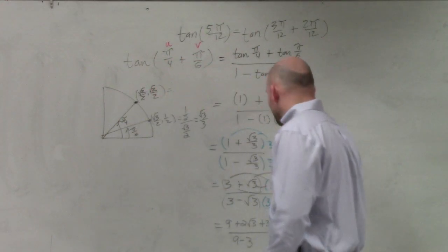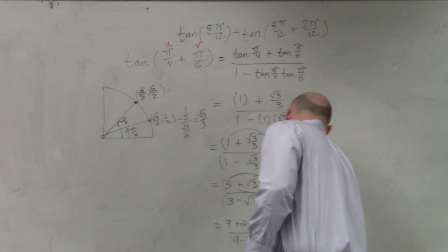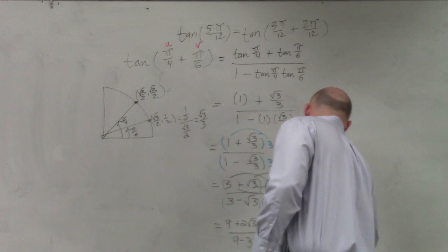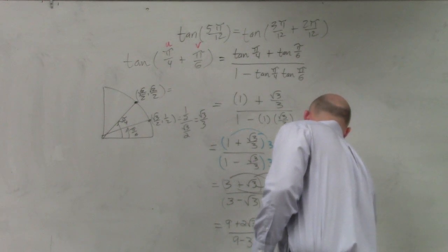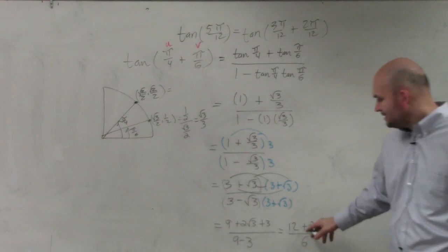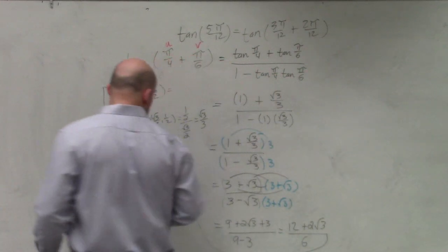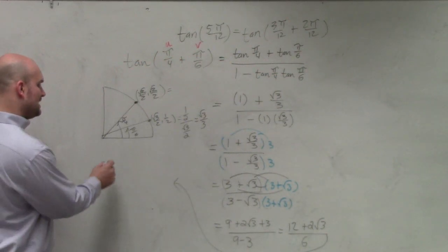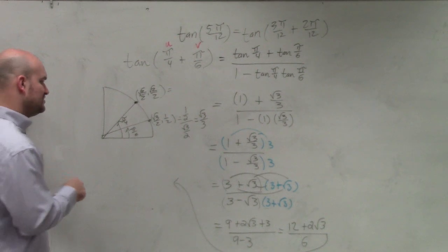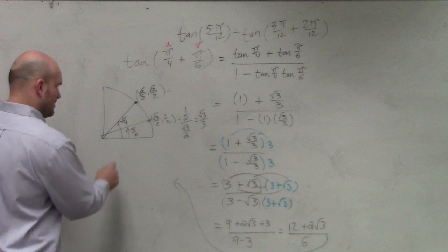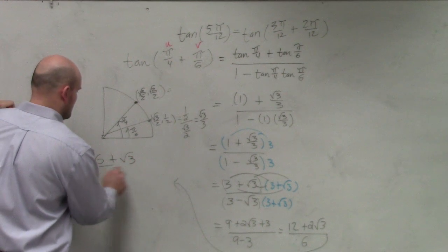And then I would simplify everything else. 9 plus 3 is 12 plus 2 square root of 3. And then 9 minus 3 is 6. And then, guys, can we simplify this one last time? Sure. You can divide the 6 into the top and the bottom. So therefore, actually, we can just divide out of 2 in each one. So therefore, I'd have 6 plus square root of 3 over 3.